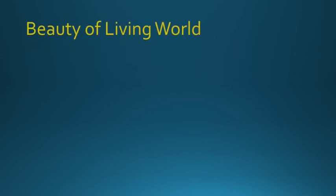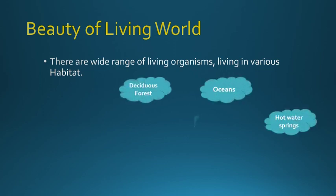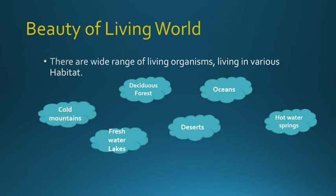Let us begin with the first part. What is the beauty of the living world? There are a wide range of living organisms living in various habitats. You can see deciduous forests, oceans, hot water springs, deserts, freshwater lakes, cold mountains, etc. Every habitat has a different type of plants and animals — that is, flora and fauna. And it is really surprising how they exist, how they evolved, and how they came into existence.